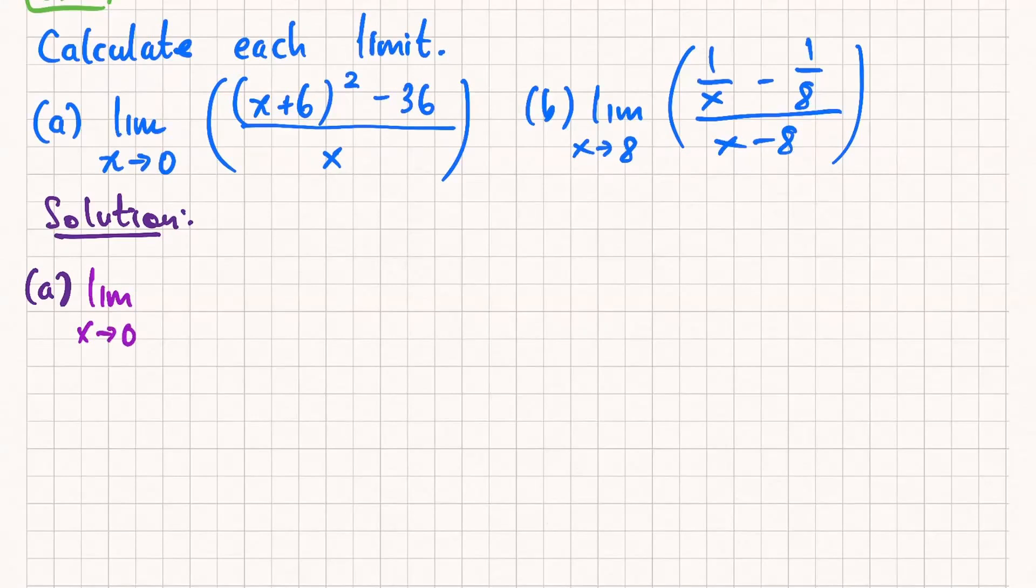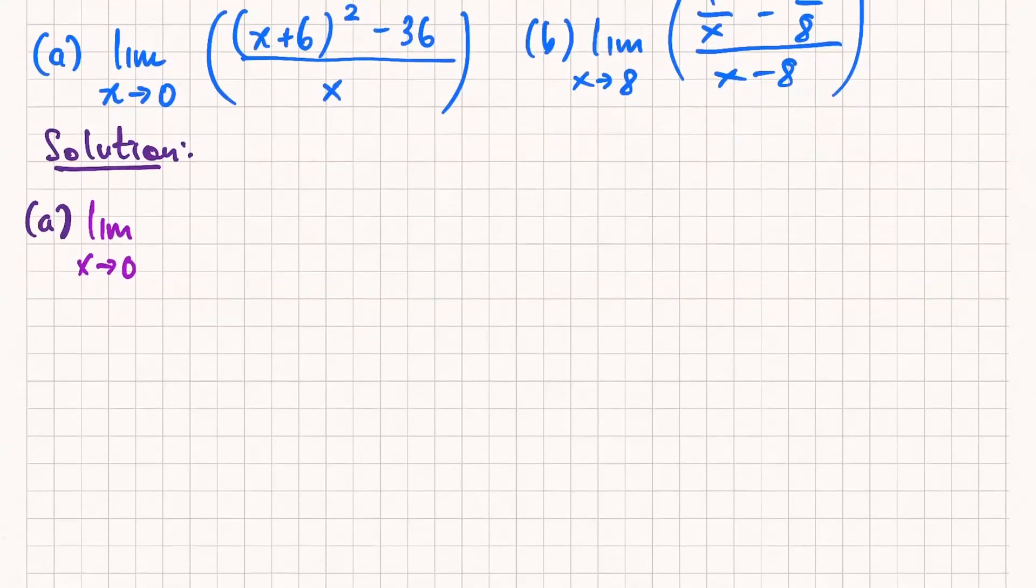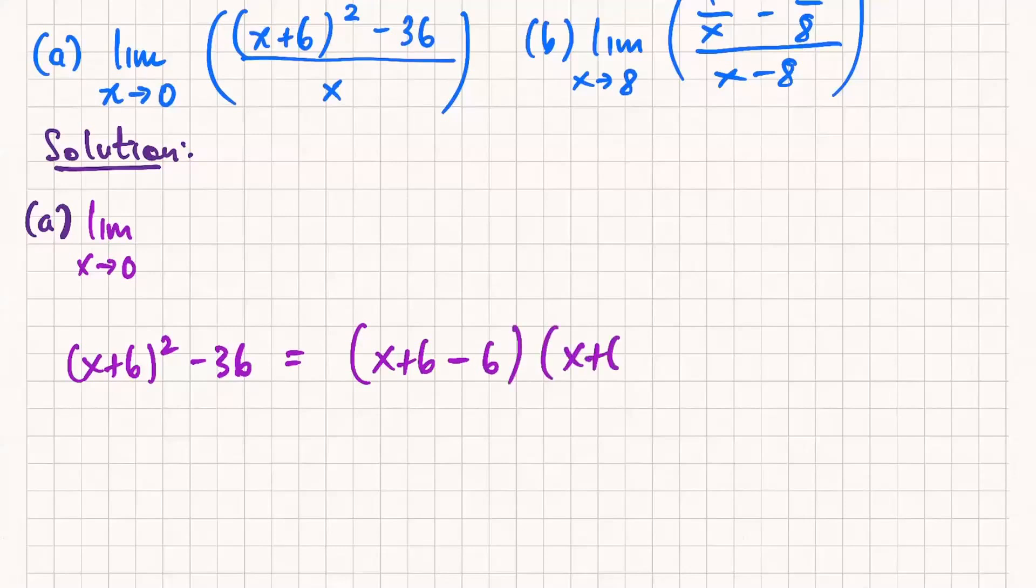So I'm going to expand the x plus 6 squares only because I know that most students probably saw that. But Swernham is correct. Notice that x plus 6 squared minus 36, you can factor the difference of squares. It's x plus 6 minus 6 times x plus 6 plus 6. So it's x times x plus 12.